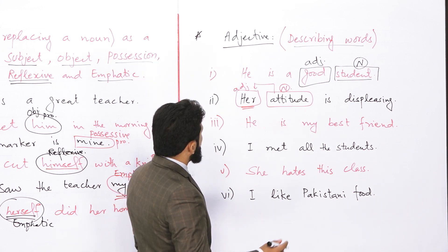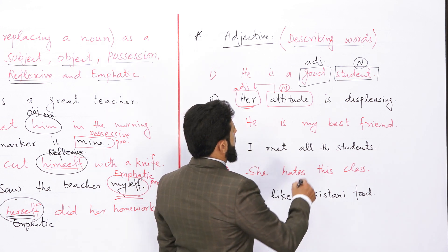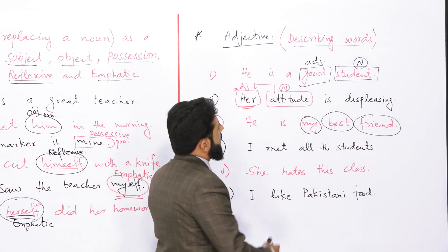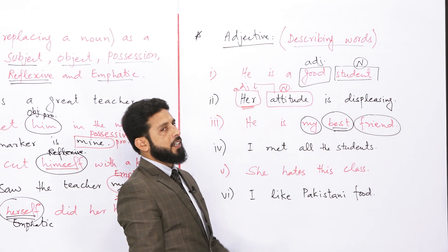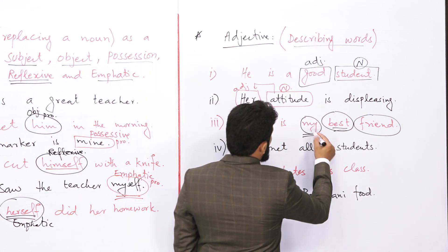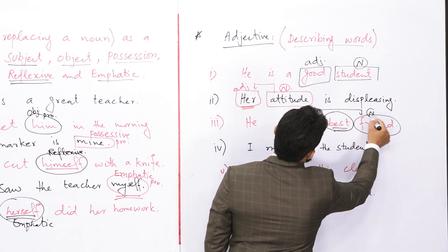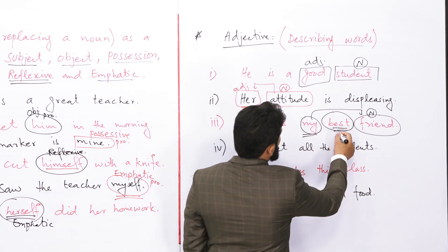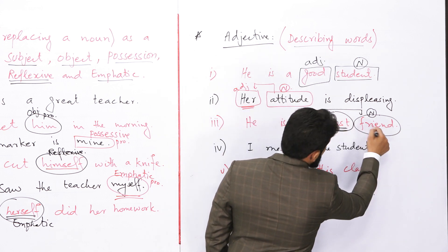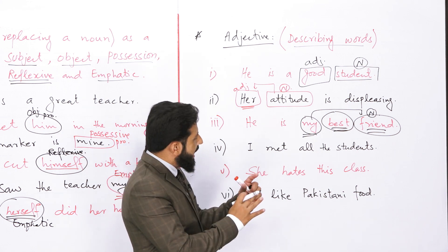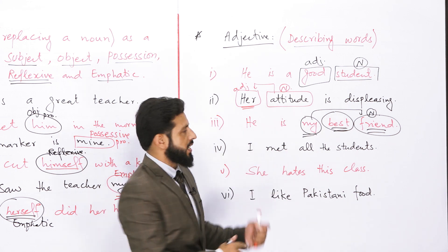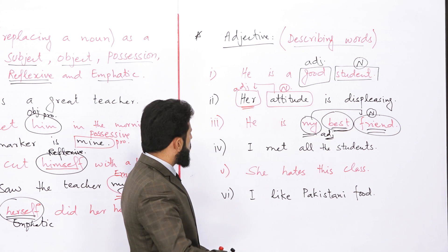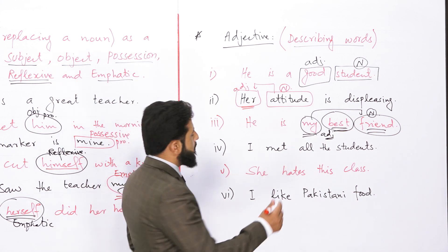تیسرے sentence کو دیکھیں: 'He is my best friend'۔ 'My' اس noun کی position بتا رہا ہے — adjective ہے۔ اور 'best' اس noun کو qualify کر رہا ہے کہ دوست ہے لیکن کیسا ہے — best ہے۔ یہ بھی adjective ہے۔